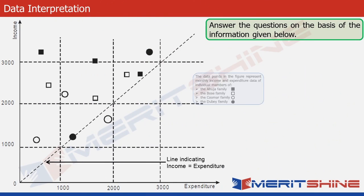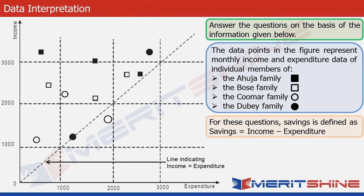The figure shown here displays the monthly income and expenditure data for individual members of four families. The four families are denoted by different signs on the graph. For example, the Ahuja family is denoted by black squares — we can see three black squares on the left, representing three different members of the Ahuja family.